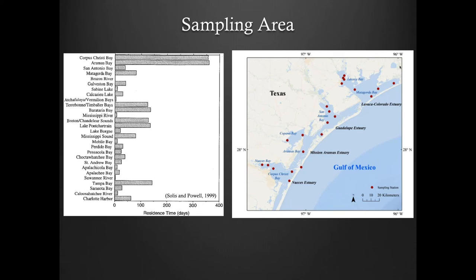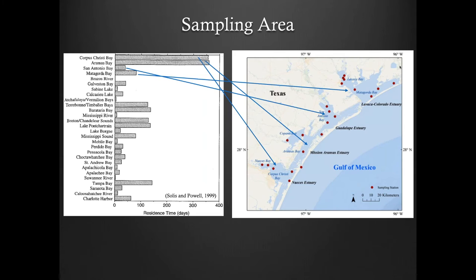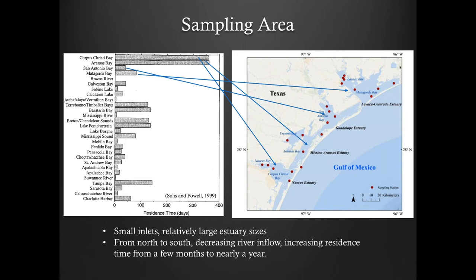We covered four major mid-coast estuaries ranging from Lavaca-Colorado estuary in the north to Matagorda Bay, then Guadalupe estuary connected with San Antonio, then Mission-Aransas, and to the south — where we are — the Nueces estuary and Corpus Christi Bay. Corpus Christi Bay and Aransas Bay have relatively long water residence times of around one year because of small freshwater inflow. San Antonio Bay has a couple of months, and Matagorda Bay has about three to four months. These estuaries have small inlets connecting to the coastal ocean with relatively large surface areas. Residence time is basically controlled by the river inflow difference.